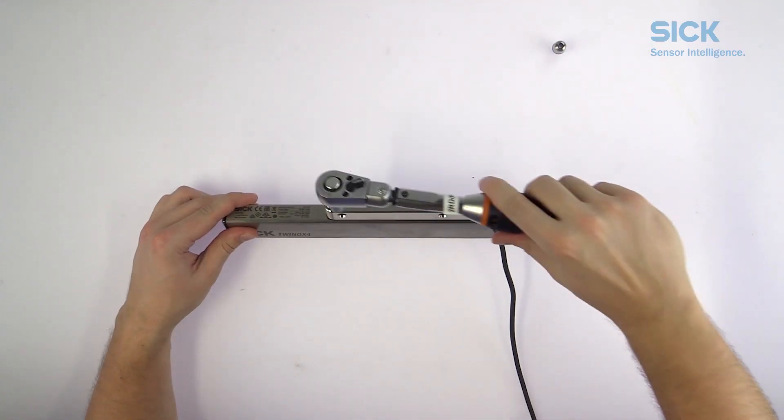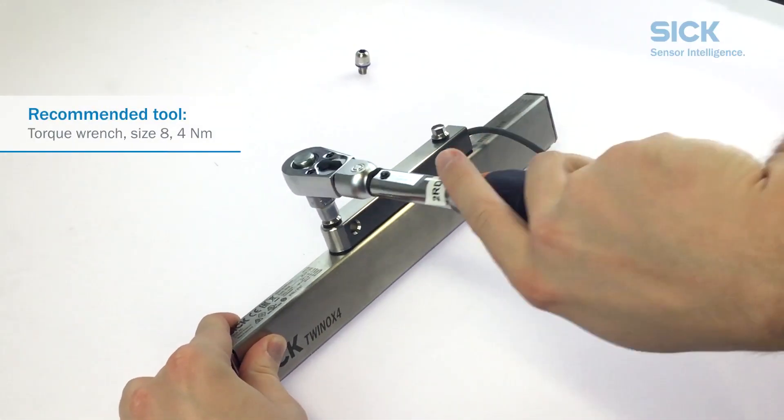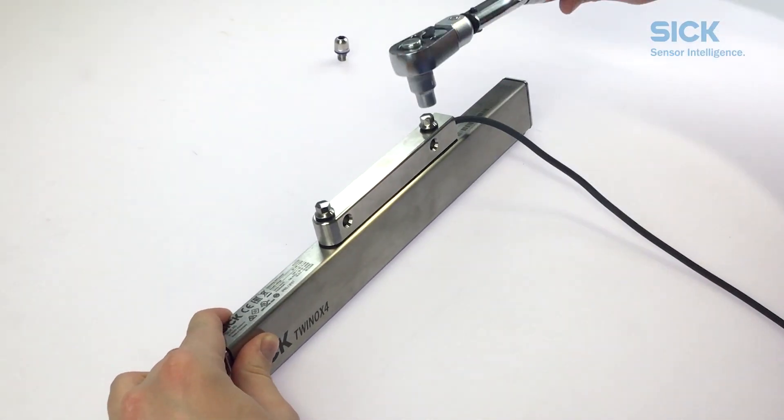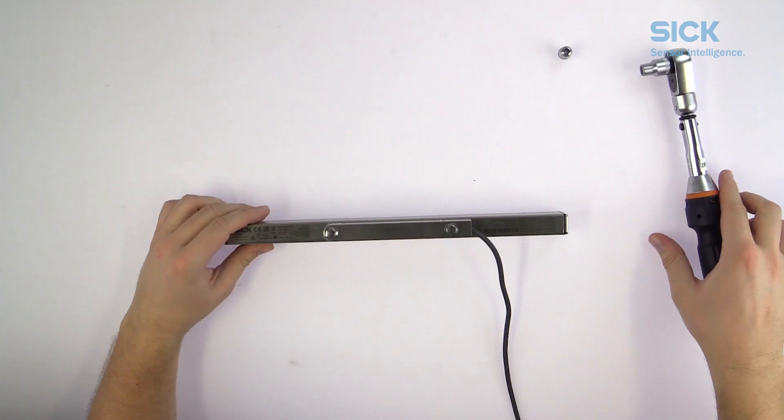Tighten the screws equally until the seals lie flush. Make sure that the seals don't slip while doing so, because this might result in potential leaks.